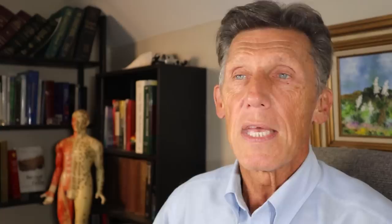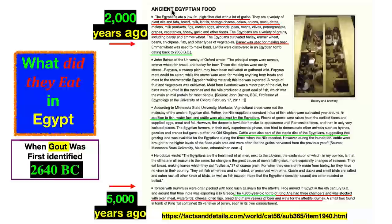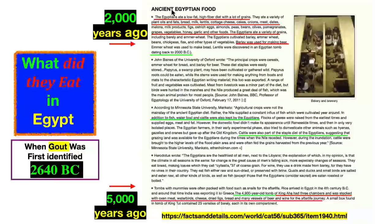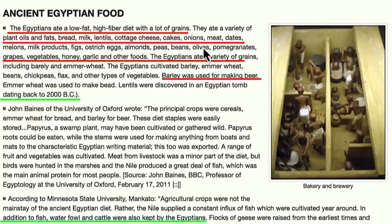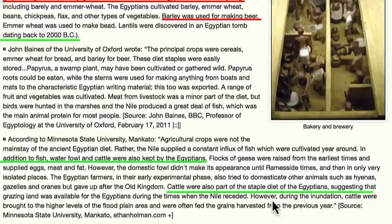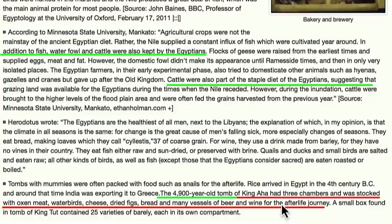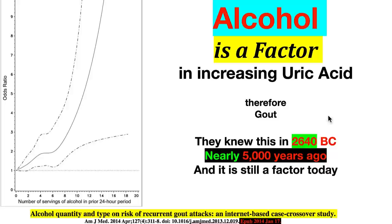By 2,000 years ago, alcohol was clearly a big deal for everybody, not just the elite. The Egyptians ate a low-fat, high-fiber diet with a lot of grains — plant oils, flat bread, lentils, cottage cheese, grapes, vegetables, honey, garlic, barley, and wheat. Under one king, funeral chambers were stocked with oxen meat, water birds, cheese, dried figs, bread, and many vessels of beer and wine for the afterlife journey. Alcohol is a factor in increasing uric acid and therefore a factor in gout — known since 2,640 BC, nearly 5,000 years ago.